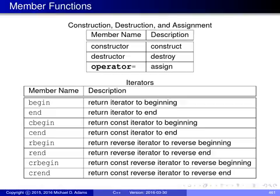The member functions for basic_string include construction, destruction, and assignment operators — with the constructor being overloaded in many ways. For iterators, begin/end return iterators to the beginning and end of the string; cbegin/cend return const iterators; rbegin/rend return reverse iterators; and crbegin/crend return const reverse iterators. The beginning refers to the first character, and the end is one past the last element.